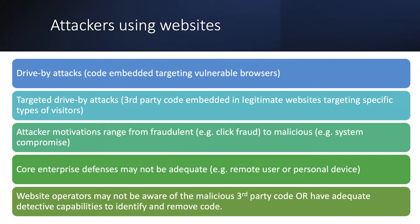Everything we've described so far is about how an enterprise responds to the risks posed by websites presenting malicious code to users. But wouldn't it be nice if website operators themselves were more proactive — looking at what's happening with their websites and recognizing that third-party code is being used to inject something into the stream for certain visitors? Just like we hold ourselves accountable for cyber hygiene, how do we help website operators hold themselves accountable?